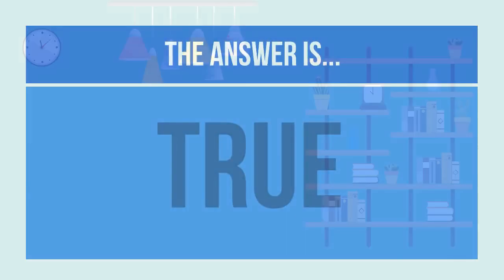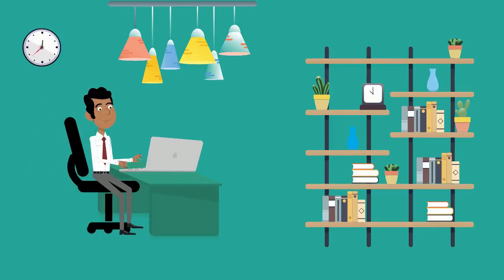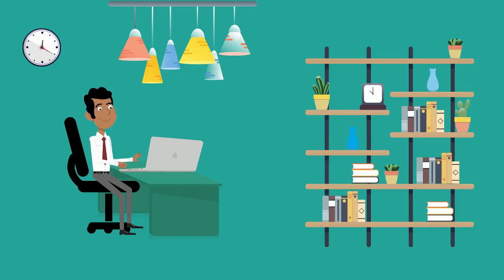You should draft a memo to the file telling contract administrators and local HUD offices who review the file what you did. This will show that you have good quality control over your household files and proactively correct problems in them.